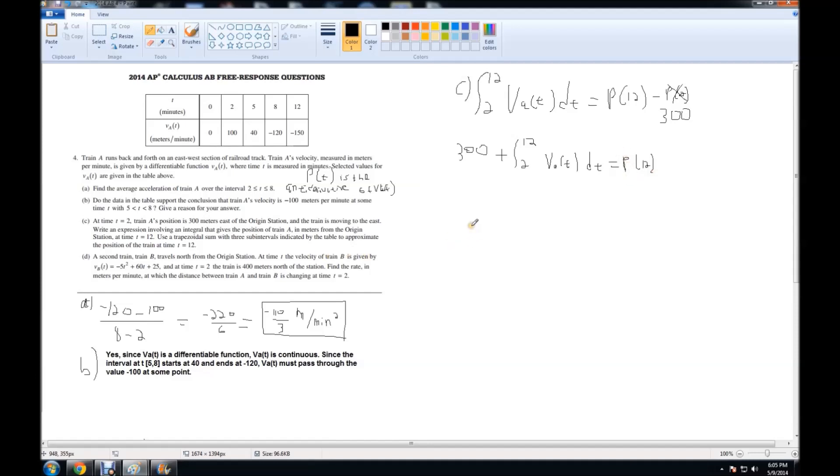Now, it asks: use a trapezoidal sum with three subintervals indicated by the table to approximate the position of the train at time T equals 12. It says three subintervals, and it tells us to start at 2. So we're going to use the intervals between 2 and 5, 5 and 8, and 8 and 12. If you remember how to do the trapezoidal sum with a table of data, you do the average of the distance times the bases added together. From 2 to 5, that's a total of 3. The distance is 3. You want to divide by 2 because it's the average. And it's from 100 to 40, so 100 plus 40.